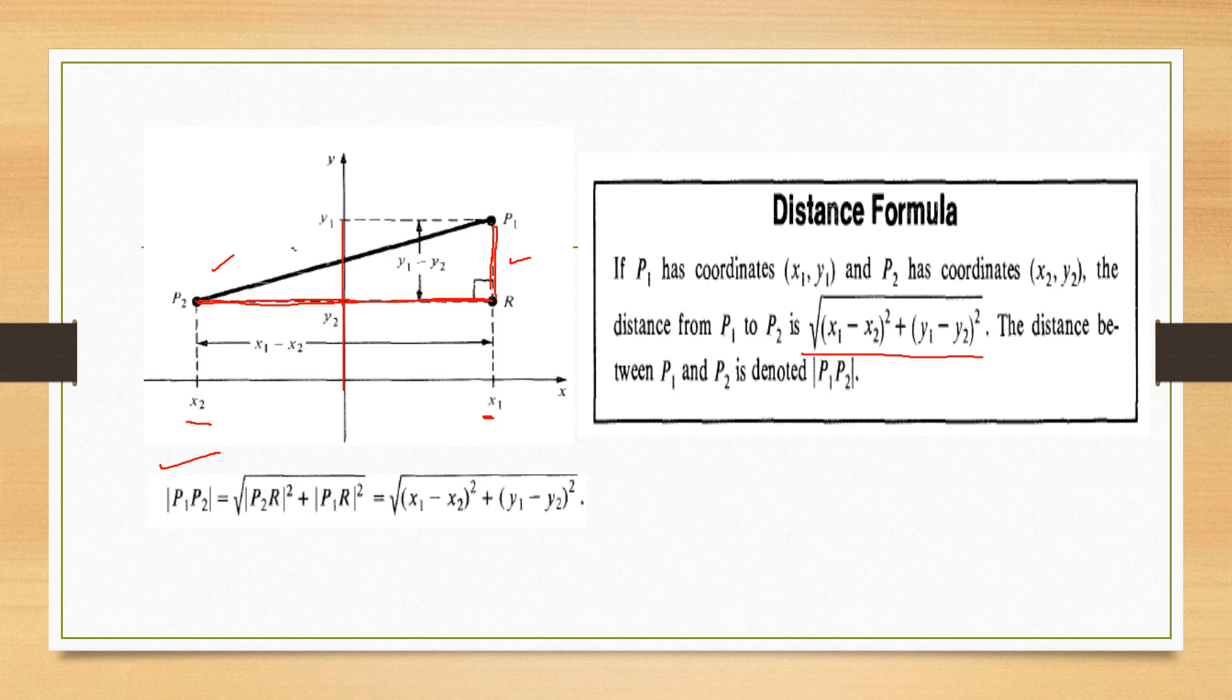Square root of x1 minus x2 squared plus y1 minus y2 squared, where P1 has the coordinates x1, y1 and P2 has the coordinates x2, y2. And using this formula, we can find the distance from P1 to P2 which is denoted as P1 P2.